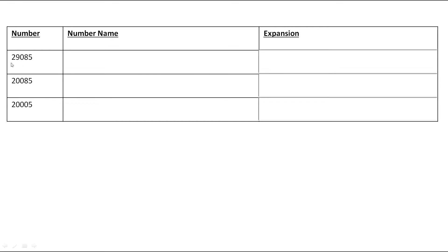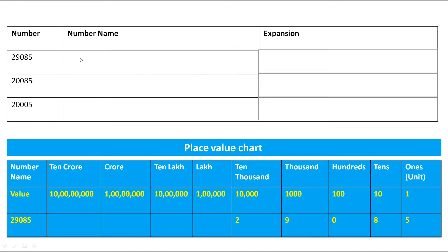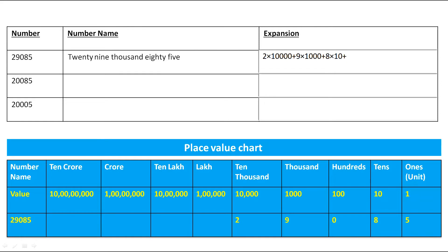The next example is 29,085. Let's put it in the place value chart. 2 is on 10,000 place, 9 is on 1,000, 0 is on 100, 8 is on 10s, and 5 is on the unit place. The number name is twenty-nine thousand eighty-five. Since there is 0 on the 100's place, the expansion is 2 × 10,000 + 9 × 1,000 + 8 × 10 + 5 × 1.